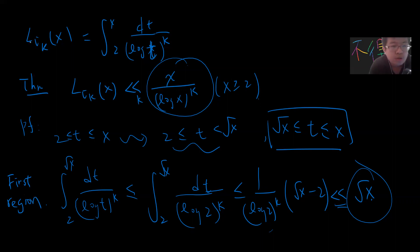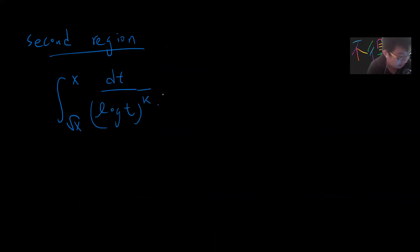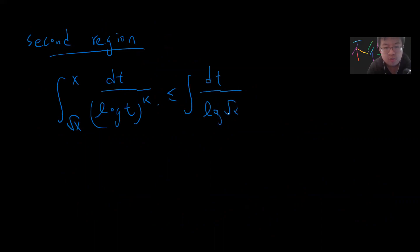Now let's consider the second region: integrating from √x to x of dt / log(t)^k. We want to bound this. In this region t ≥ √x, so log(t) ≥ log(√x).